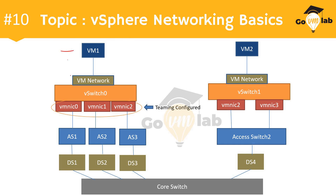Here again, we have VM1 which is connected to the VM network port group of your virtual switch zero. This virtual switch is having three uplinks connected to it: VMNIC0, VMNIC1, and VMNIC2. When a virtual switch is configured with more than one uplink, we call that a teaming configuration, which means that our virtual switch is configured in teaming mode. So this is all about the virtual network — that's your vSphere networking.